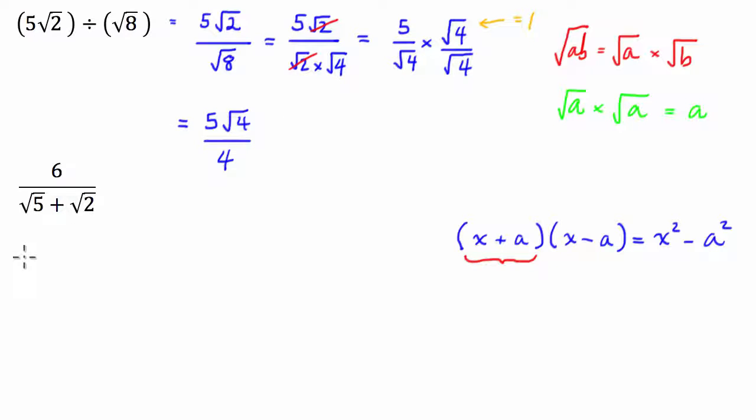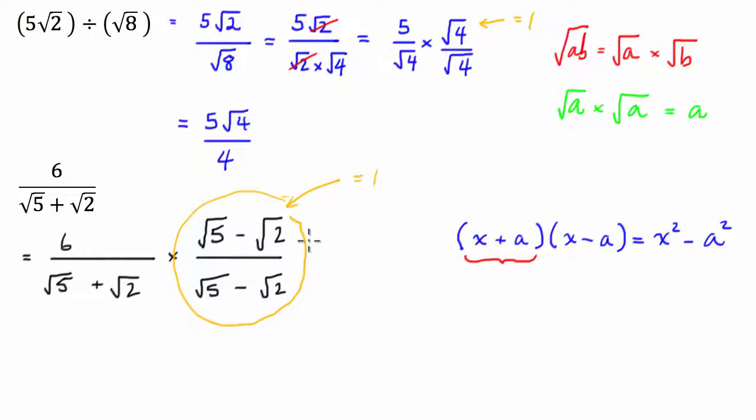So what I'm going to do is I'm going to go, this is 6 divided by the square root of 5 plus the square root of 2, and then times this again by 1. But this time I'm going to write 1 as the square root of 5 minus the square root of 2 divided by the square root of 5 minus the square root of 2. So you can see here again, this is still equal to 1, this entire thing here.